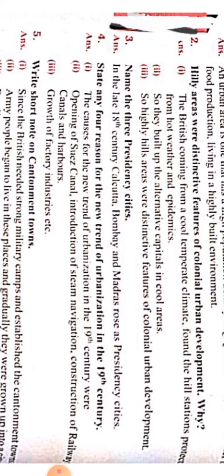In the late 18th century, Calcutta, Bombay, and Madras were the three presidency cities, because in those places trading and business was at the top level. So much trading happened in Calcutta, Bombay, and Madras, and the British got so much profit from those places. So those are the three presidency cities.